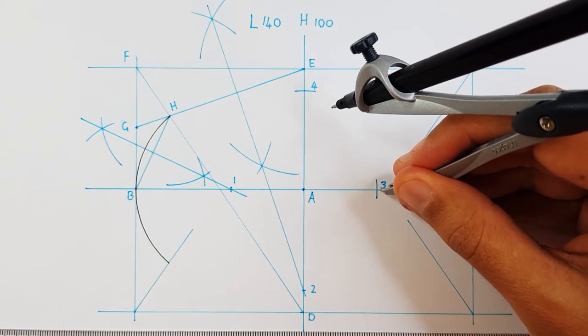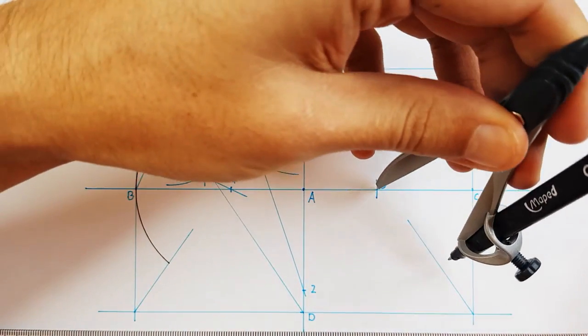Without adjusting my compass, I will use the exact same measurement on point 3 and C.